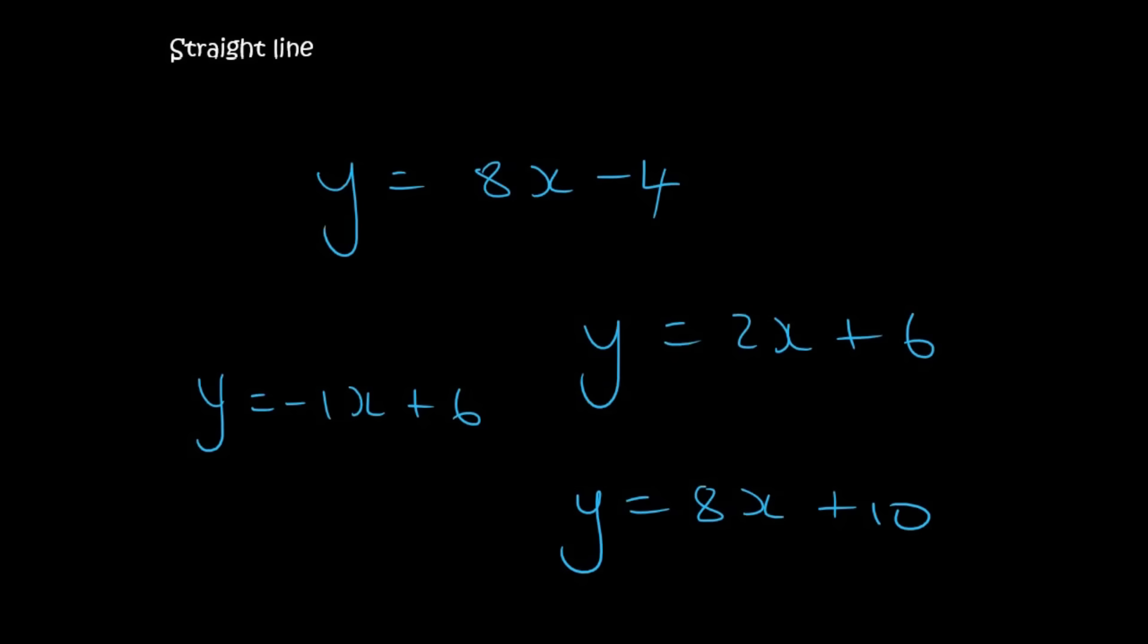These are all straight lines. Because they've got a y equals to, then there's a number, and then an x, and then another number. A number, x, and then another number. A number, x, and another number. A number, x, and another number.